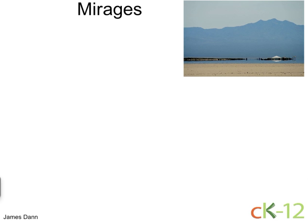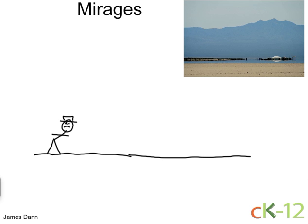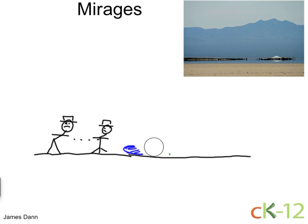We all know the classic story of a man in the desert, on his last legs, just barely making it. Maybe he has a hat, but nothing else. No water. Dying of thirst. And then, out of nowhere, he sees a beautiful pool of water and a tree — an oasis. He doesn't have to go much further. He travels along, and then what happens? It disappears, only to reappear further out. What's going on here? Is he hallucinating? No.